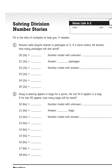Rosario sells bicycle wheels in packages of two, which would make sense because bicycles have two wheels. If a store orders 46 wheels, how many packages will she send?